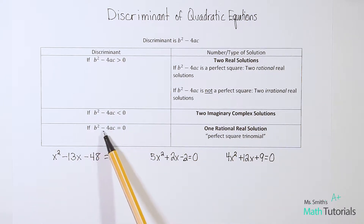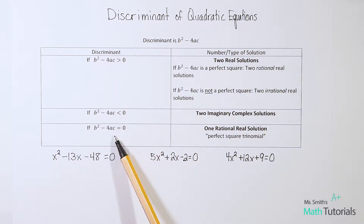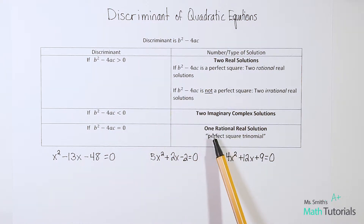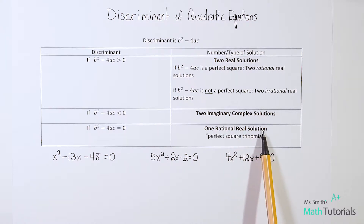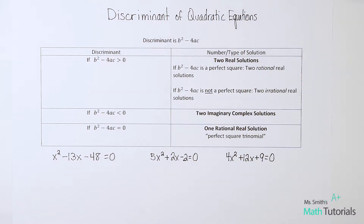What if you simplified your discriminant and it equaled zero — not greater than, not less than, but equal to zero? Then you have one rational real solution. Those would be your perfect square trinomials. We did a whole video on completing the square and perfect square trinomials; those would only have one rational real solution.